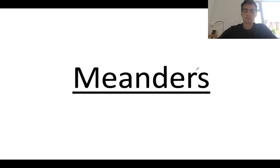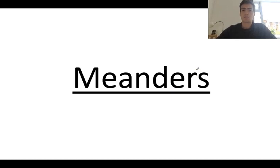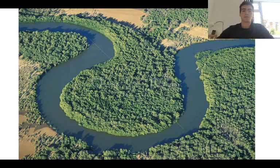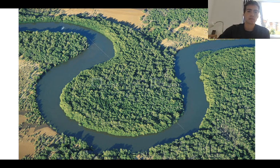The first feature we're going to look at is something called meanders. Meanders are quite simply a bend in the river – something that might look a bit like this. All of these here are meanders.